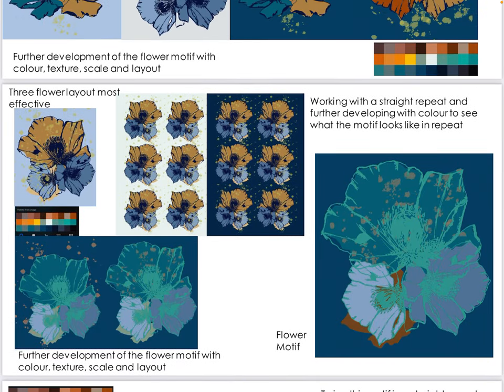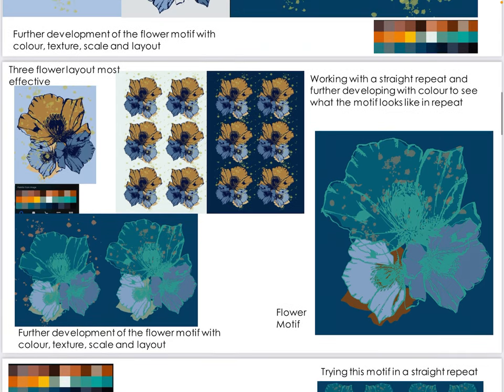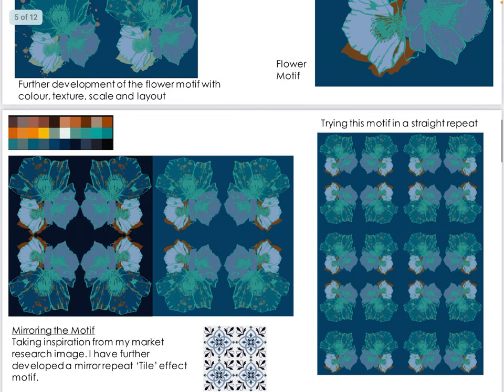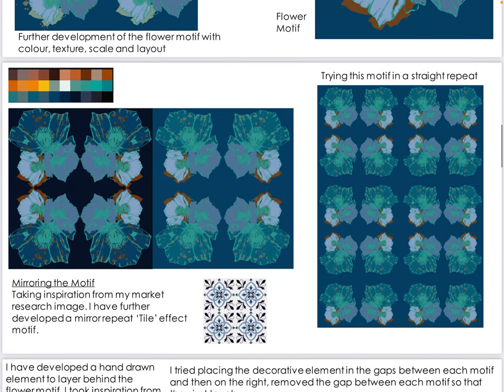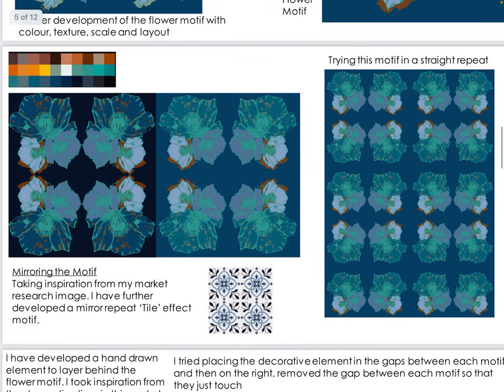This motif has been decided upon and tried in a straight repeat. The choice was then made to further develop that motif — colors have been changed using the same consistent color palette, giving a very different look. The final motif on the right-hand side has then been chosen as the one to further develop. What we can see here is further development of that motif, creating a mirror, almost tile-like image with a clear link to an image placed into the market research.